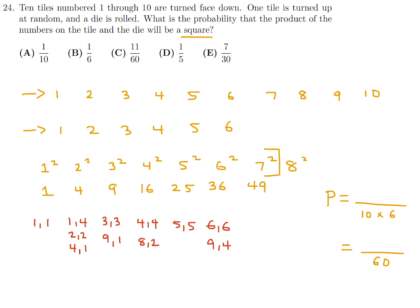So that's it. Let's count these. We've got 1, 2, 3, 4, 5, 6, 7, 8, 9, 10, 11. So there you go. That's my probability. 11 over 60. Which for number 24 is choice C.